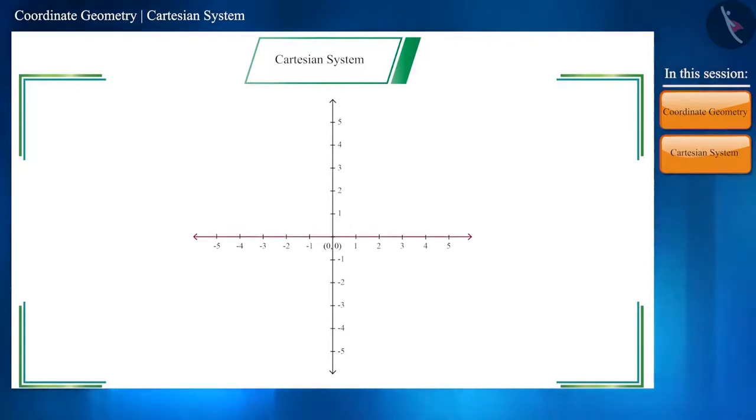The horizontal line is called X-axis and it is named as XX-dash. Similarly, the vertical line is called Y-axis and it is known as YY-dash. The X-coordinate is also called abscissa and the Y-coordinate is also called ordinate.